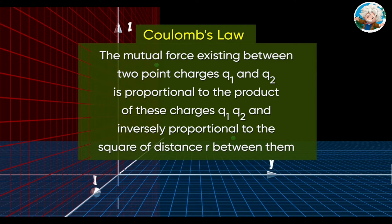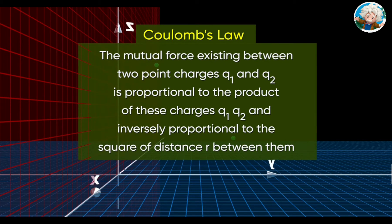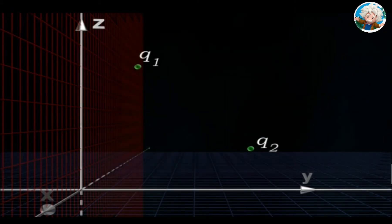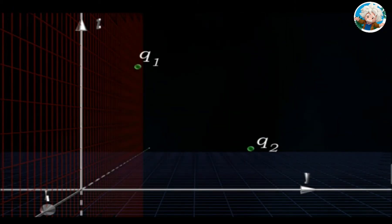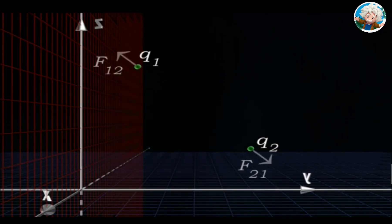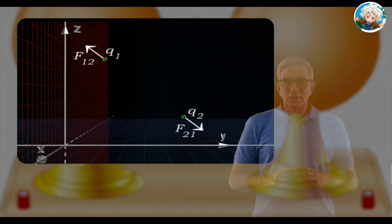Coulomb's law can be stated as: the mutual force existing between two point charges q1 and q2 is proportional to the product of these charges q1·q2, and inversely proportional to the square of the distance r between them. Let q1 and q2 be like charges — mutual forces of repulsion exist between them.